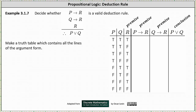Now we complete the truth table. The implication if p then r is false only when p is true and r is false; otherwise the implication is true. Looking at the first and third columns, p is true and r is false in row two and row four. In these two rows if p then r is false, and in all other rows the implication is true. The column for if p then r is: true, false, true, false, true, true, true, true.